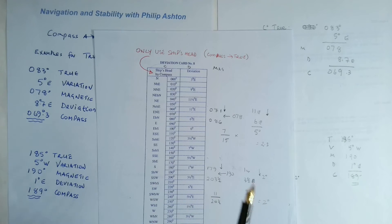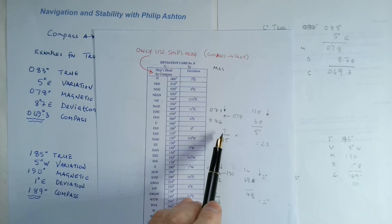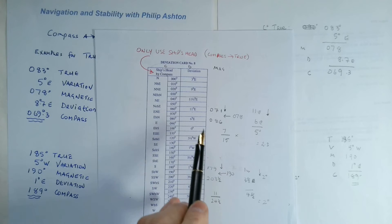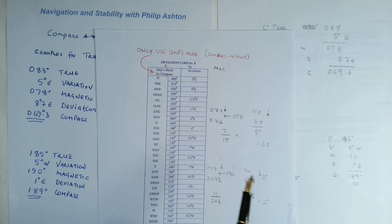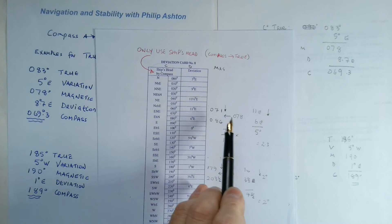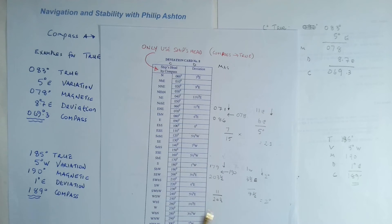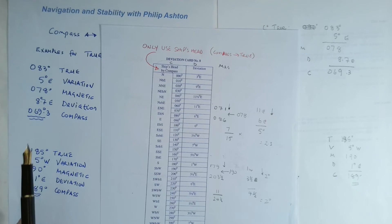So we want 078. 71 to 78 is 7, 71 to 86 is 15, and the difference between the two deviations is 5 degrees. So 7 over 15 times 5, and then because we've gone this way with our interpolation, we subtract the 2.3 from 11, leaving us 8.7. Apply that and that gives us our compass.